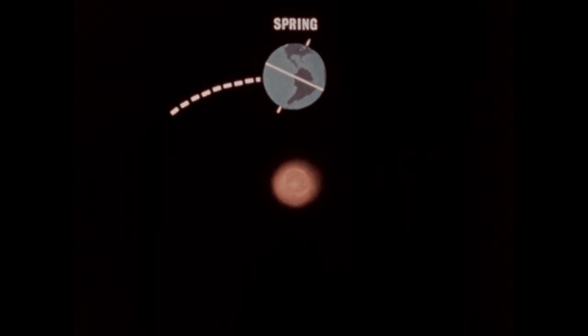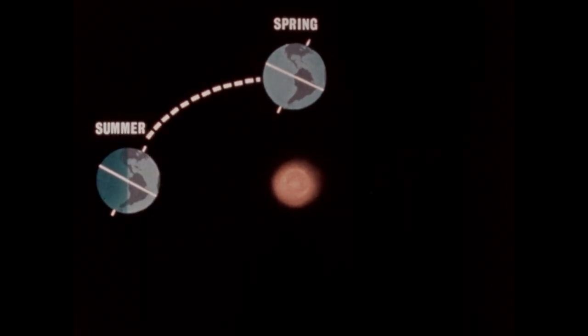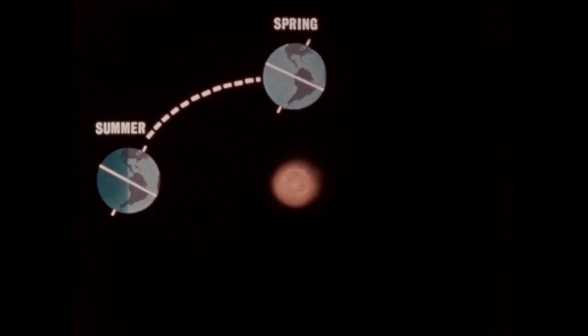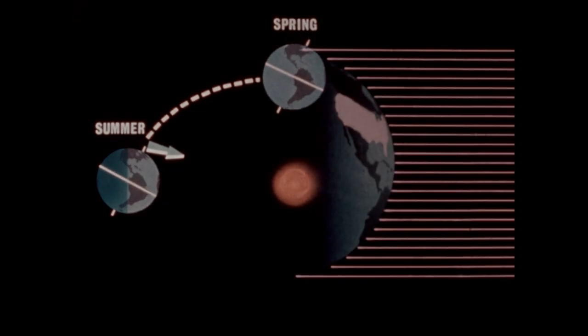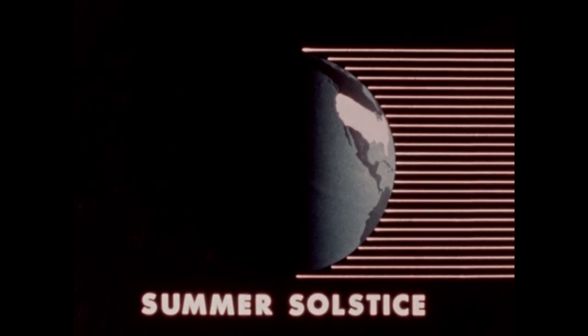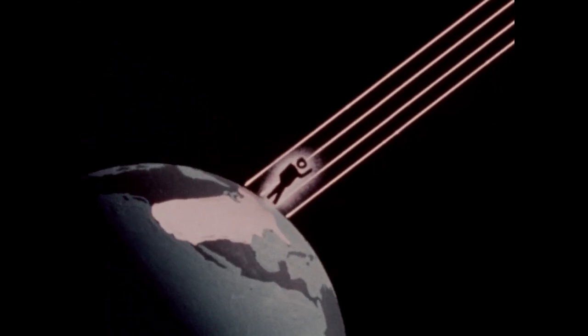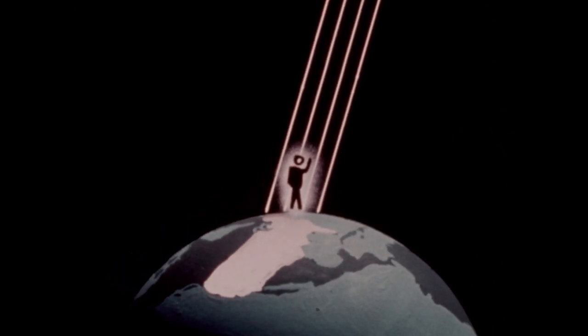As the Earth continues in its orbit, it reaches this position on the first day of summer, about June 22nd. On this day, the Earth's axis is still tilted just as much as before, but now the northern end of the axis is tilted toward the sun. The first day of summer is the day of the summer solstice. At noon on this day, for a person in the northern hemisphere, the sun will appear to be higher in the sky than on any other day. This means that the sun's rays are more direct than at any other time, and more direct rays give more heat.